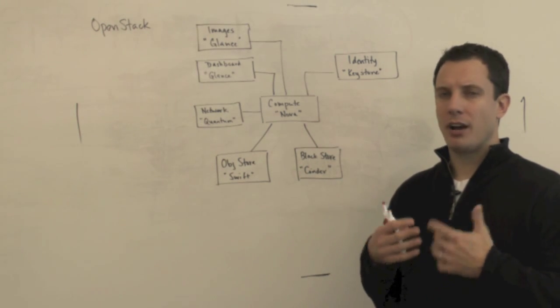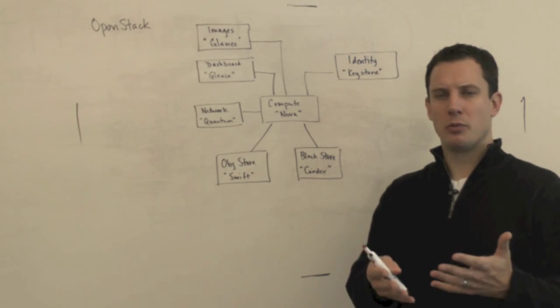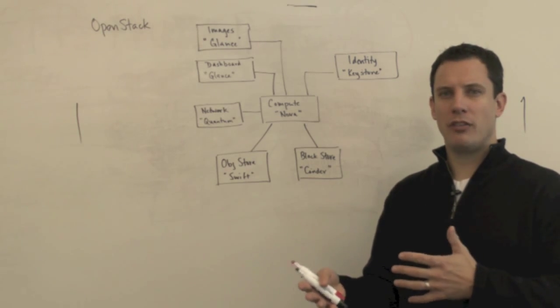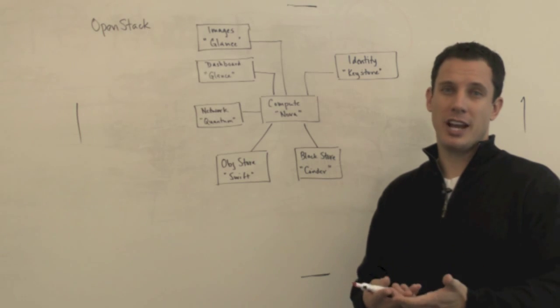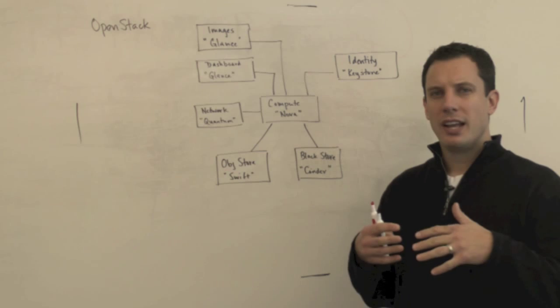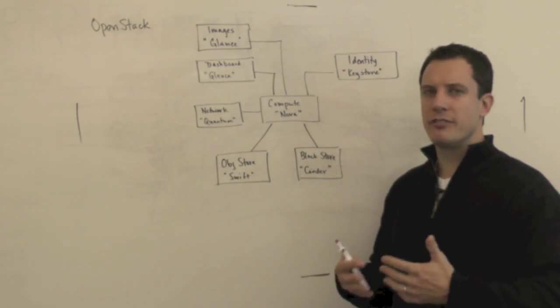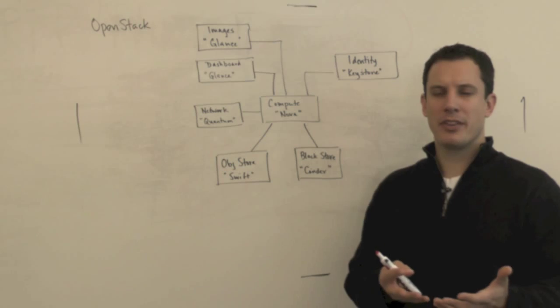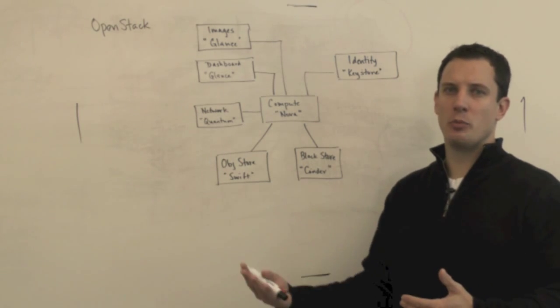This is October, November of 2012, the Folsom release, or the F release, which is the sixth or seventh release, is now available. And what has been introduced in Folsom is a number of changes. So let's talk about that first, and then we'll talk about what sort of changed in the OpenStack community.